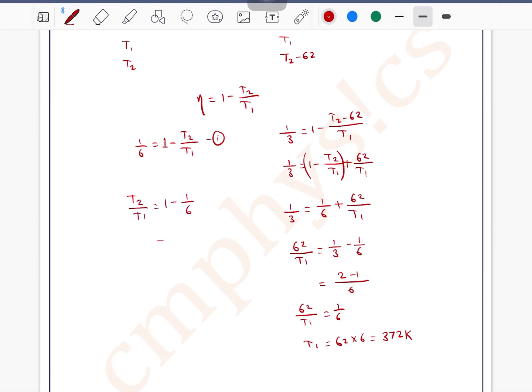So this is equal to 5 by 6 T2 by T1. So T2 can be written as 5 by 6 into T1. T1 is 372.